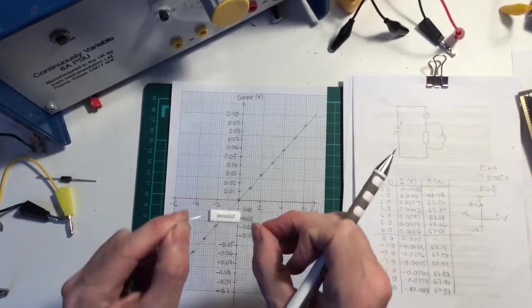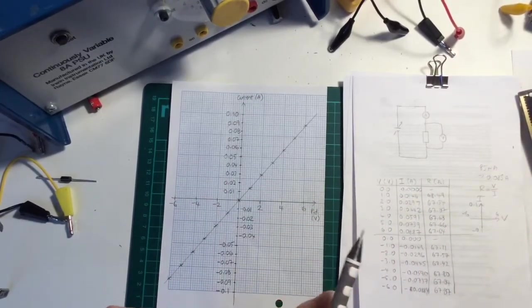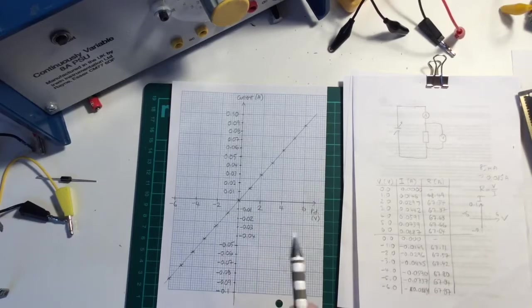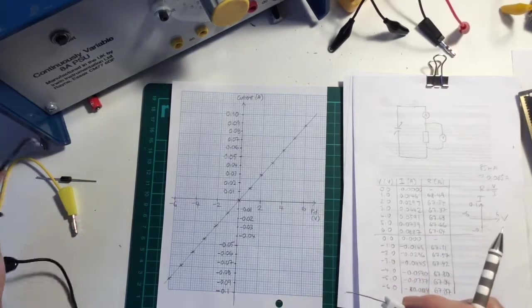So that was the graph for the resistor. Let's do another graph for a different component. We'll do the light bulb next.